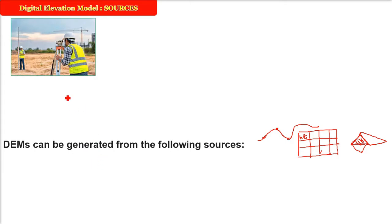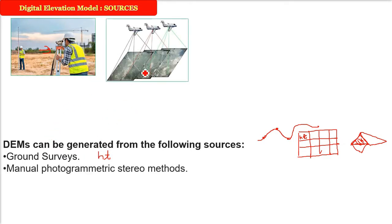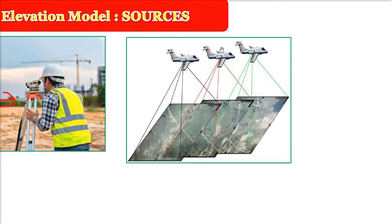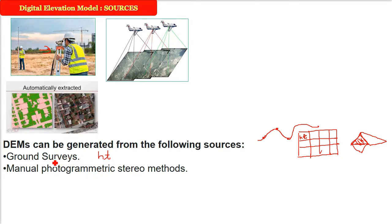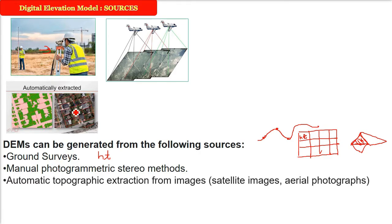The first source is ground surveys — quite cumbersome but the most popular and widely used method even today. If you are interested in a specific place, the area covered will be less but the points will be quite accurate. The second way to get elevation data for DEM is the manual photogrammetric stereo method. Photogrammetry is measurement from photos — when we take aerial photography, the same point on two different images allows us to find the difference in height using the parallax method.